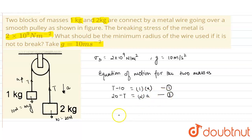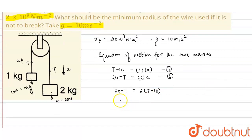Now removing a from equations 1 and 2, substituting the value of a in equation number 2, what we'll get is: 20 - T = 2(T - 10).